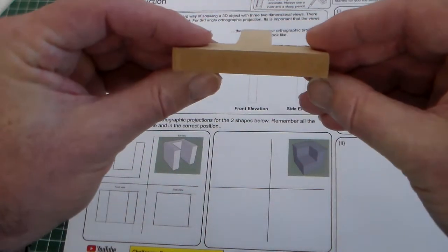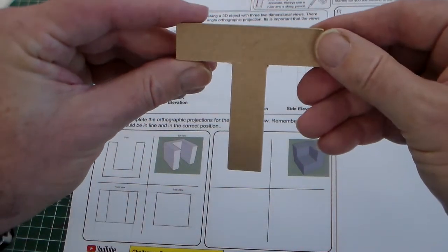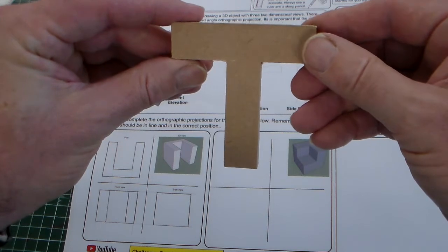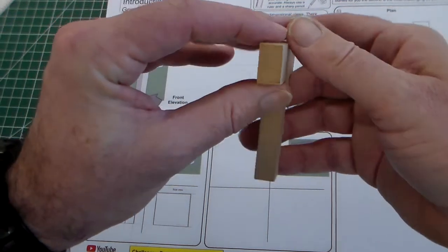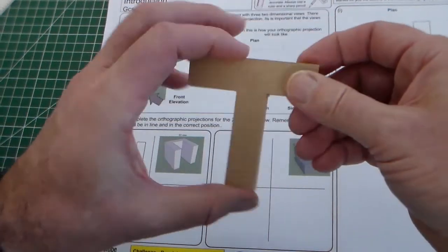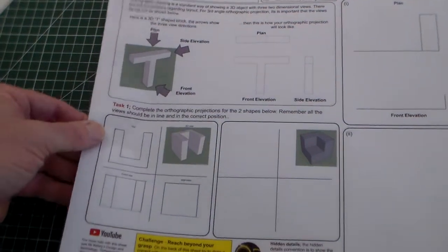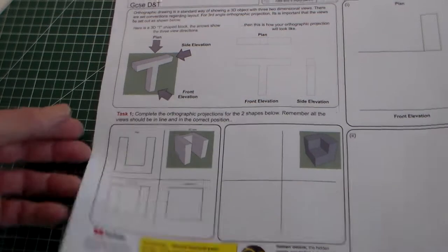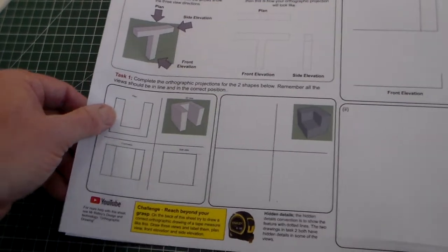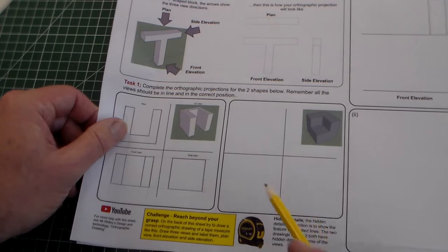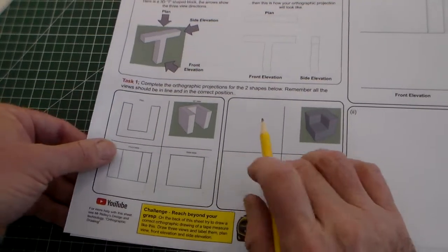So we have a plan view, a front view and a side view. So we've looked at that and we've also, in the last clip, created this shape here. Now we're going to do this second part of task one.